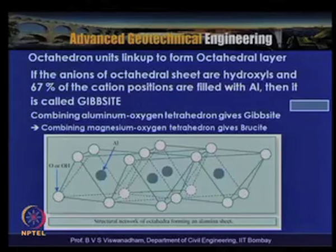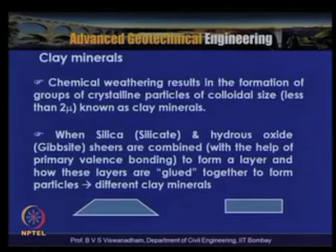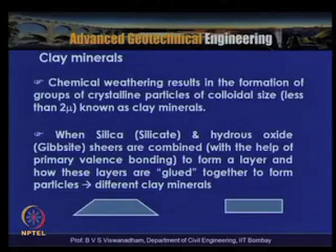When several octahedron layers are linked, they form an octahedral layer. If the anions are hydroxyls and 67% of the cation positions are filled with aluminium, it is called gibbsite. Combining aluminium-oxygen octahedra gives gibbsite; combining magnesium-oxygen octahedra gives brucite. Clay minerals are formed when silicate and gibbsite sheets are combined by primary valency bonds to form layers.